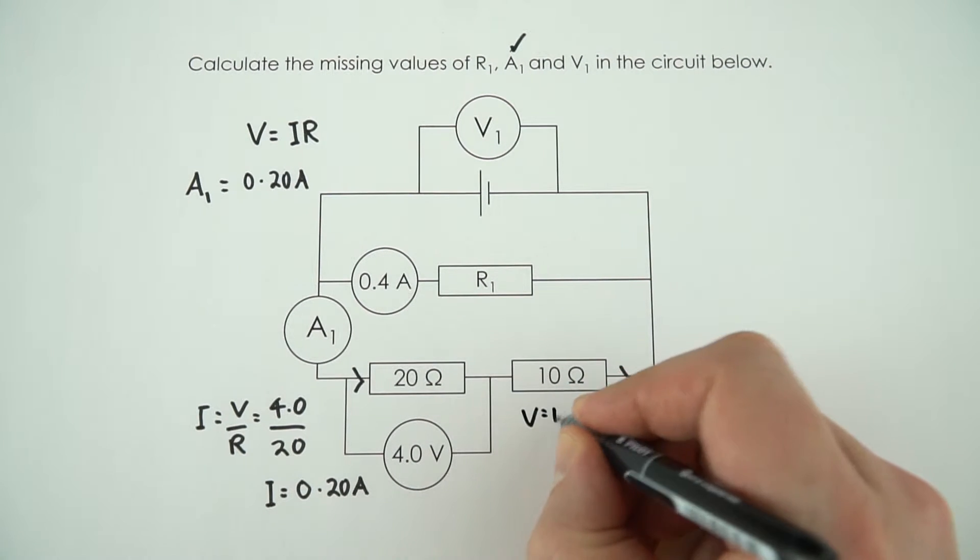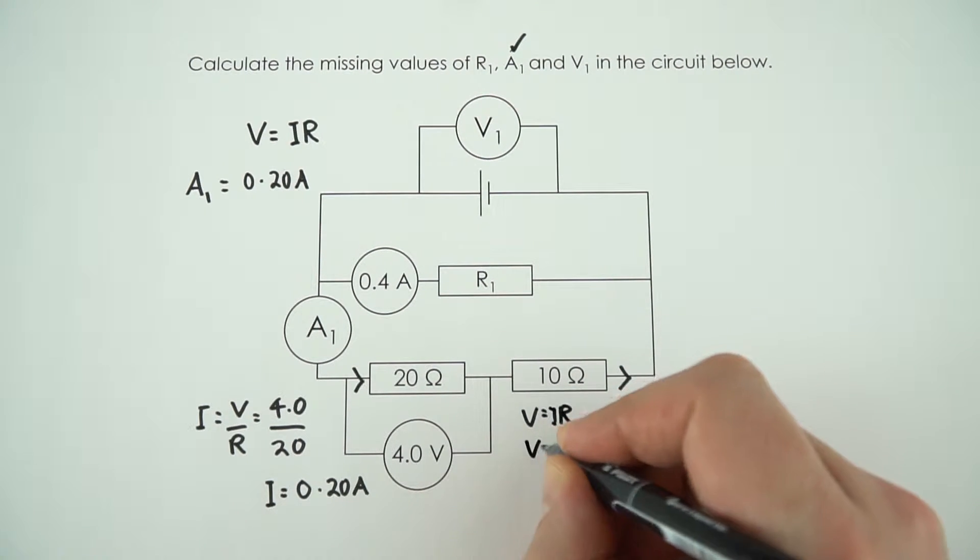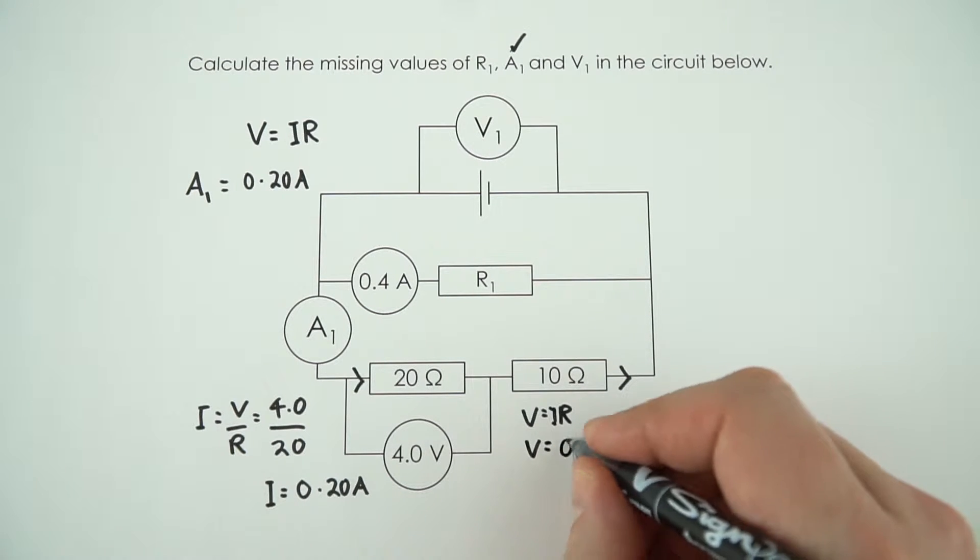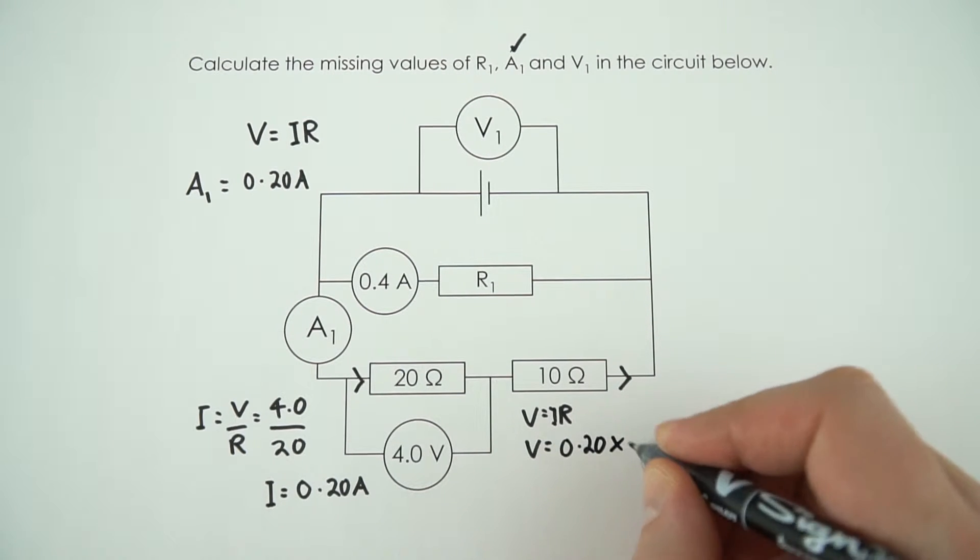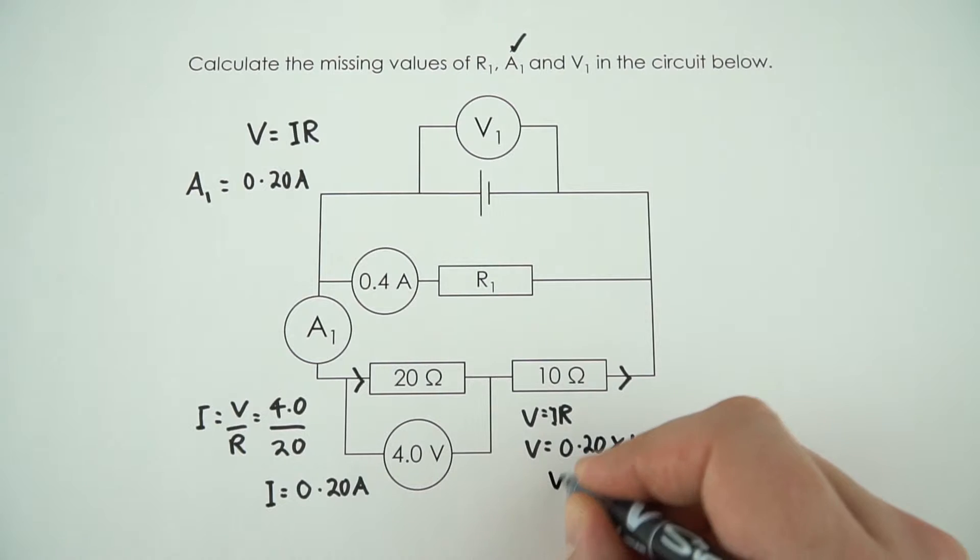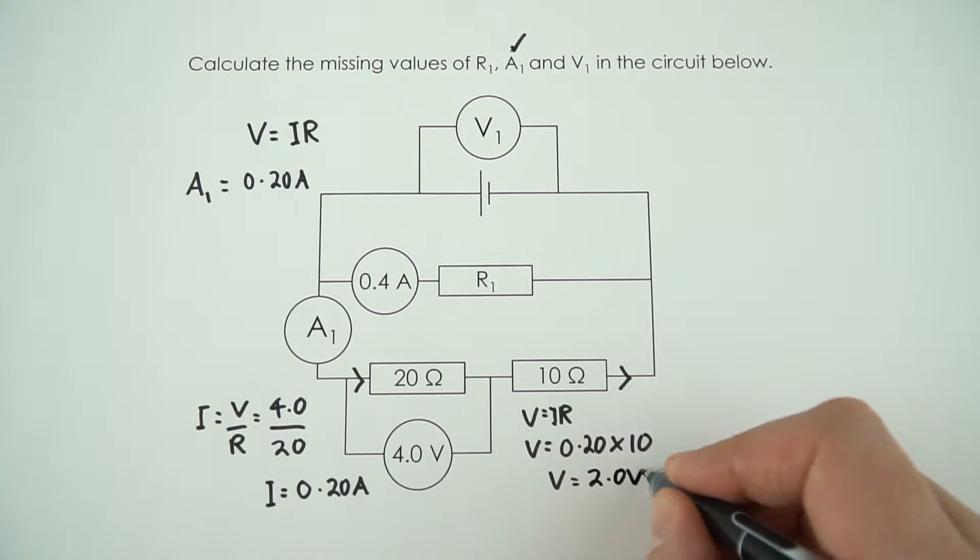And that means the value of V is going to be equal to the current 0.20 times the resistance of 10, and that means the potential difference across this component is 0.2 times 10, which is just 2.0 volts.